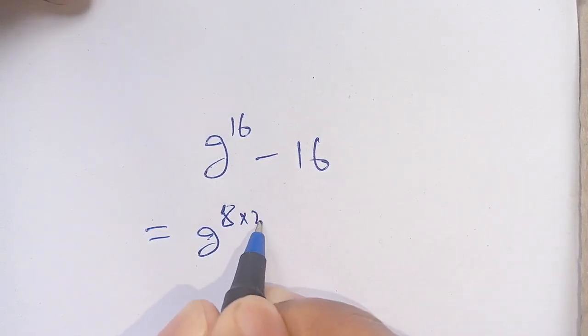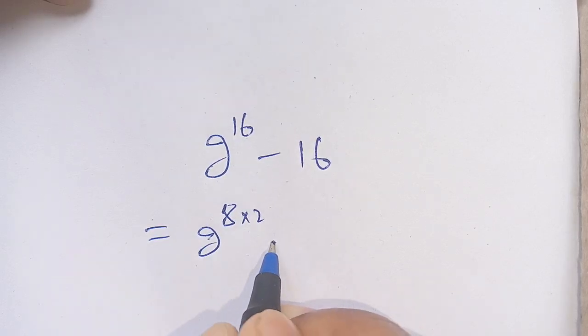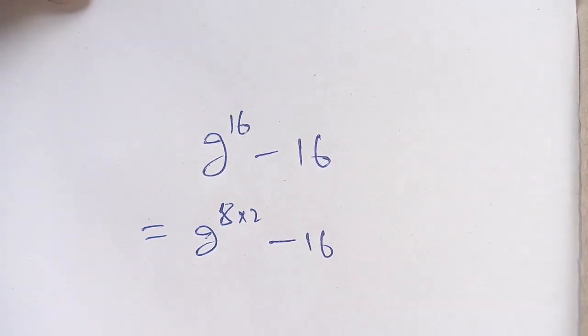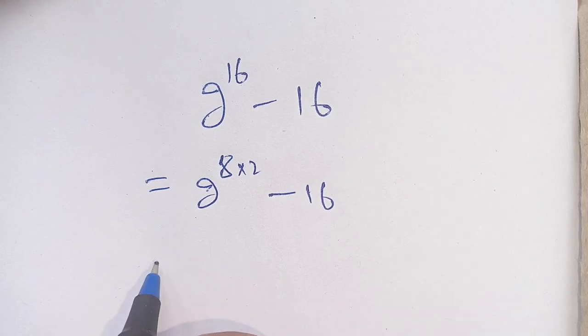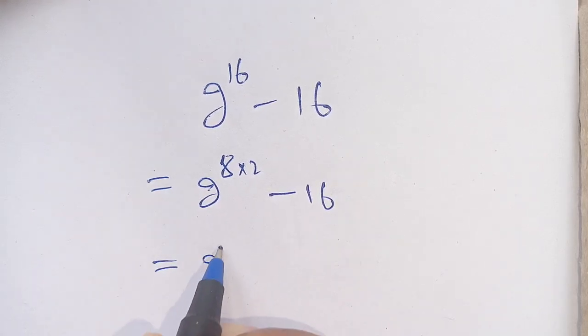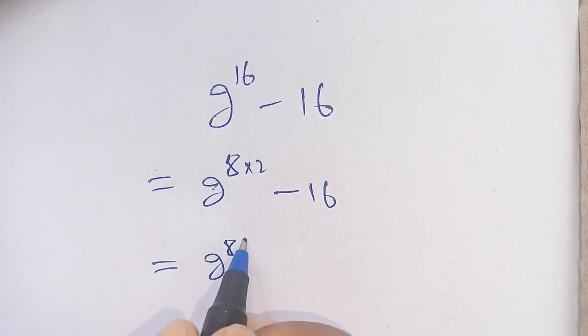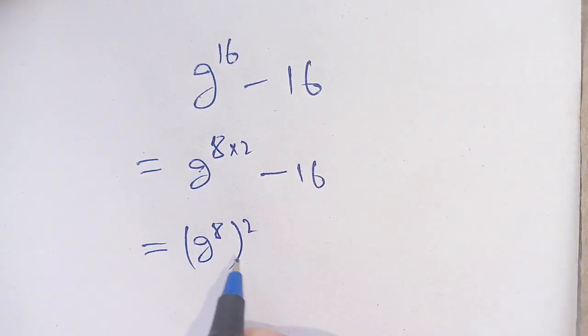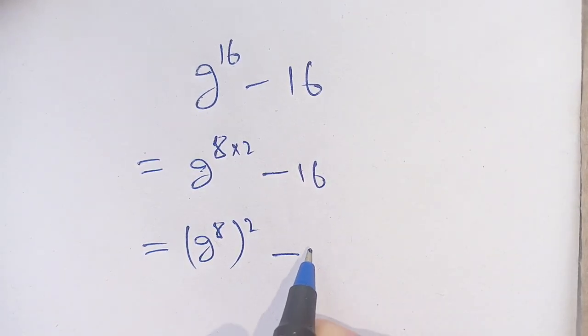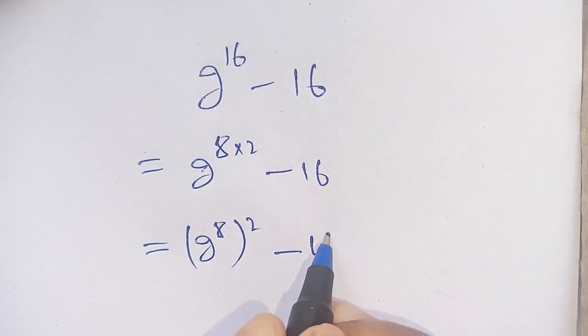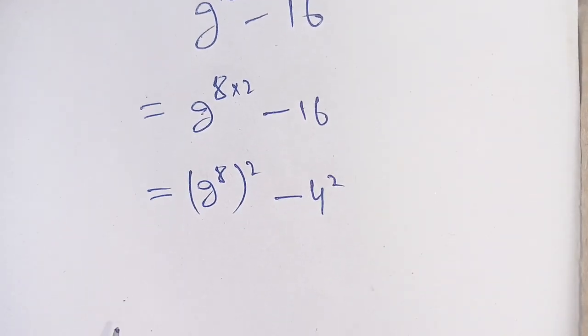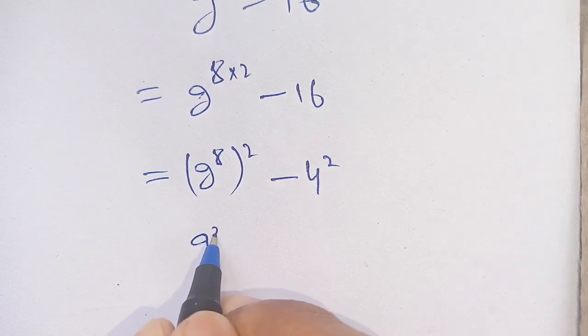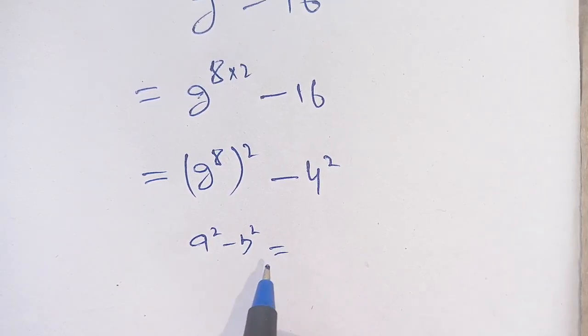In the next step, we can write this as (2^8)^2 - 16. Now, 16 can be broken down as 4^2. So we have (2^8)^2 - 4^2. We know that a^2 - b^2 equals (a+b)(a-b).